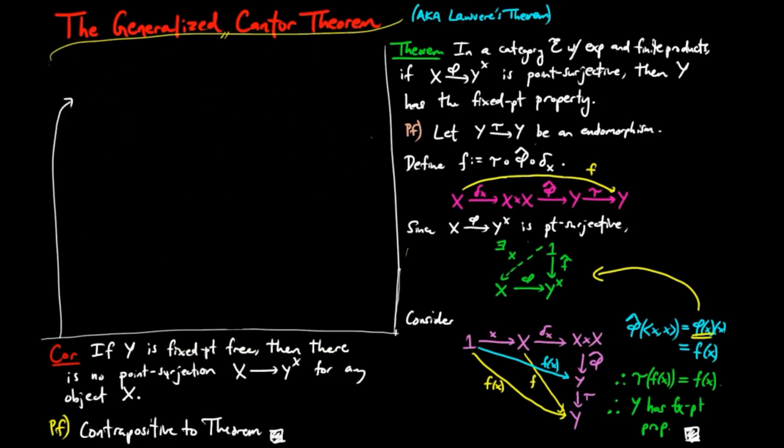Then this gives us the classical Cantor theorem in set theory. In the category of sets, which is Cartesian closed, the cardinality of x is strictly less than the cardinality of the power set of x. Notice that we have the twist map, which is the logical negation being fixed point free, and point surjection is logically equivalent to being surjective.